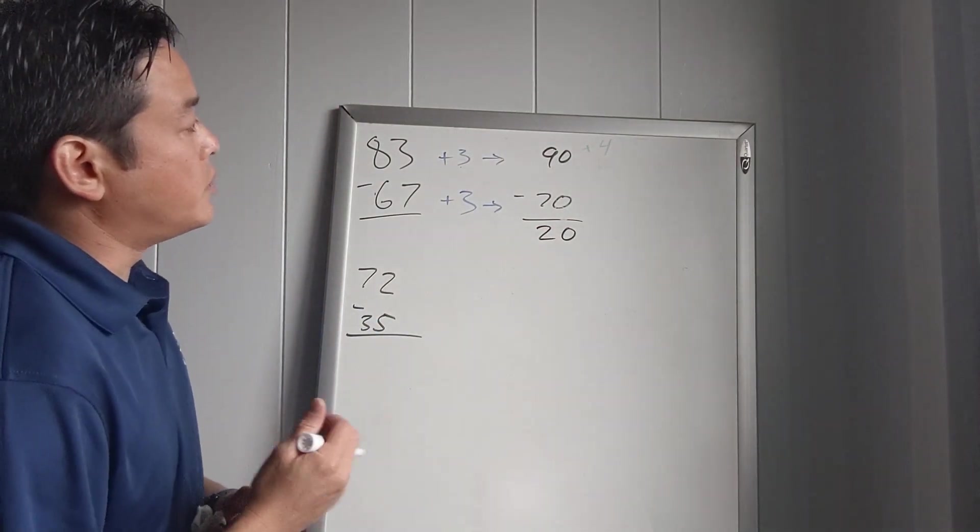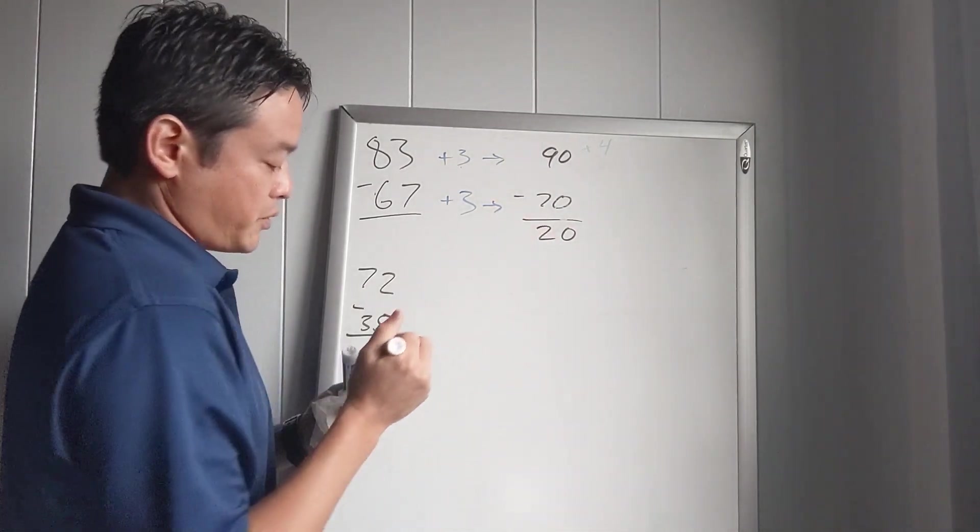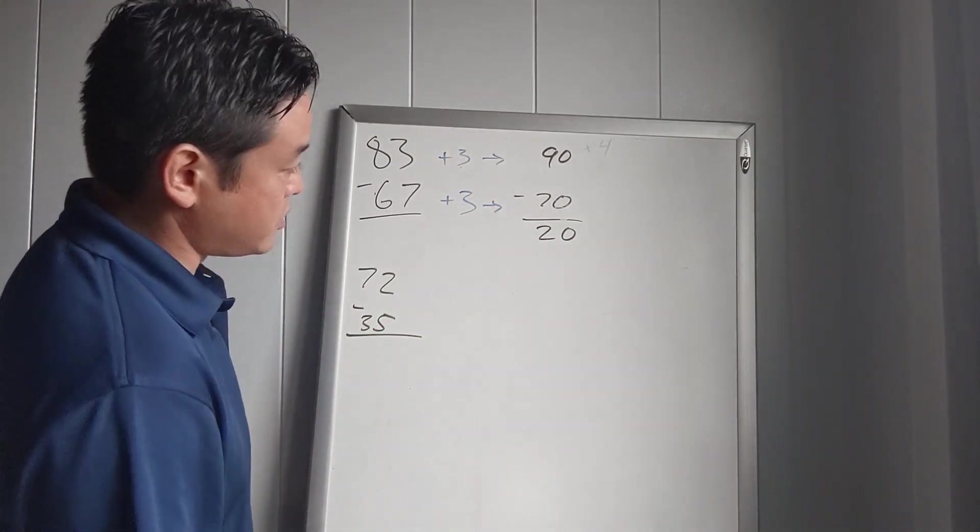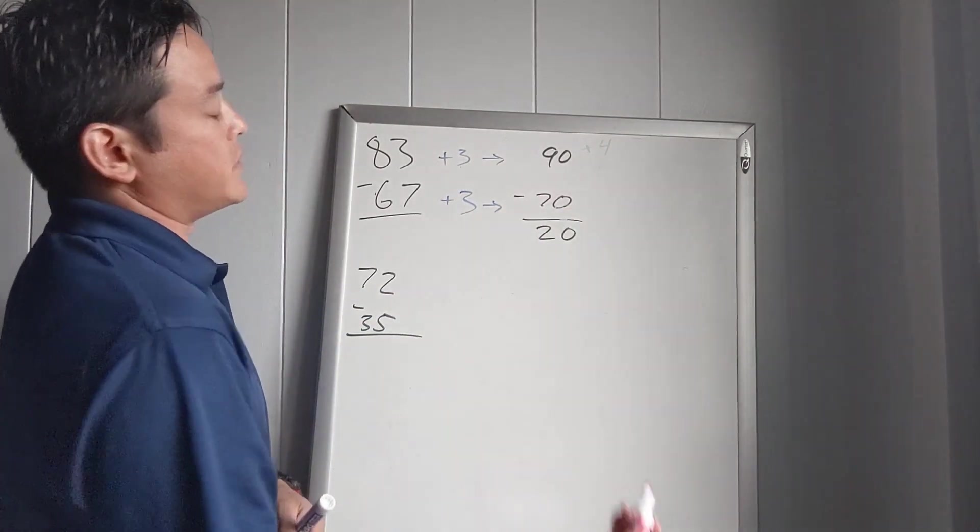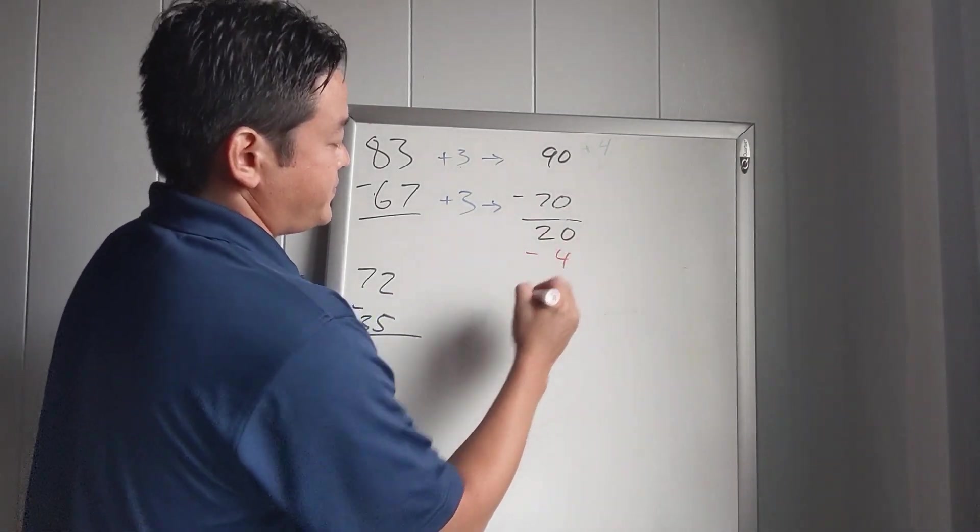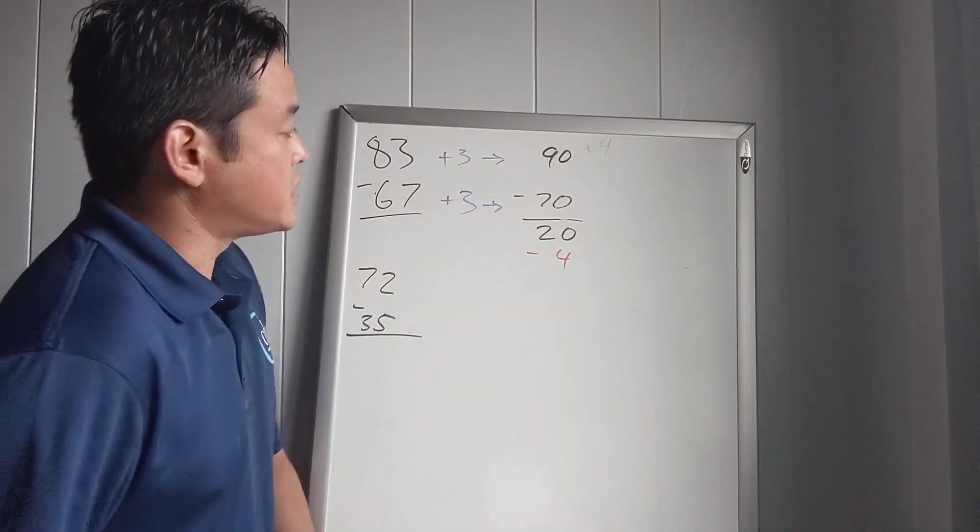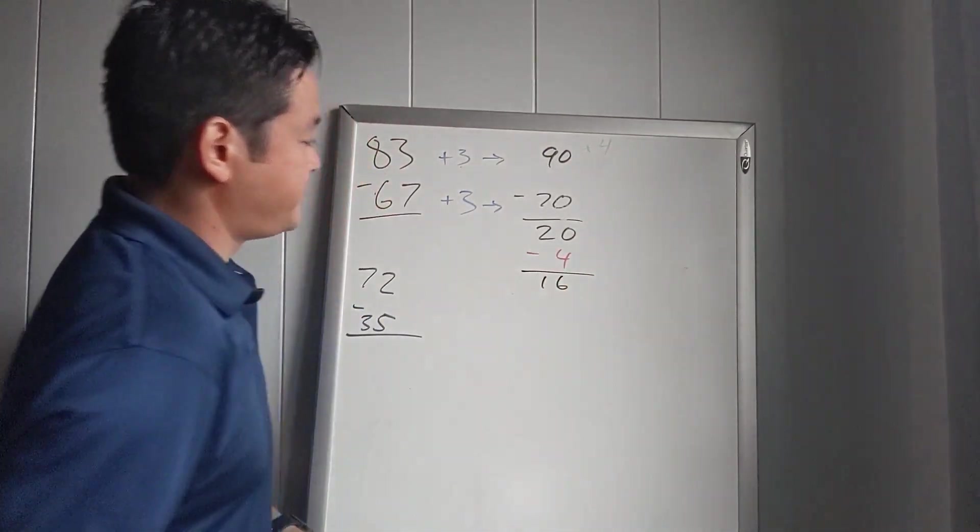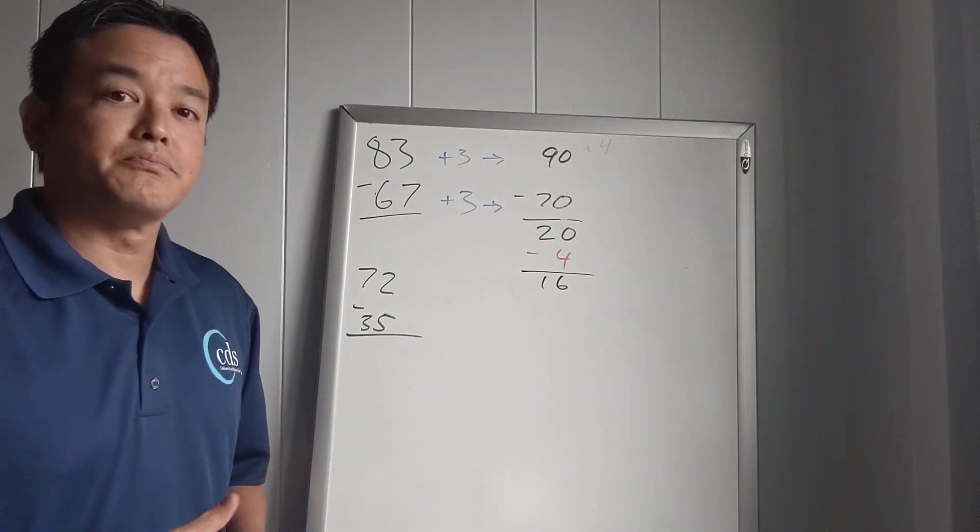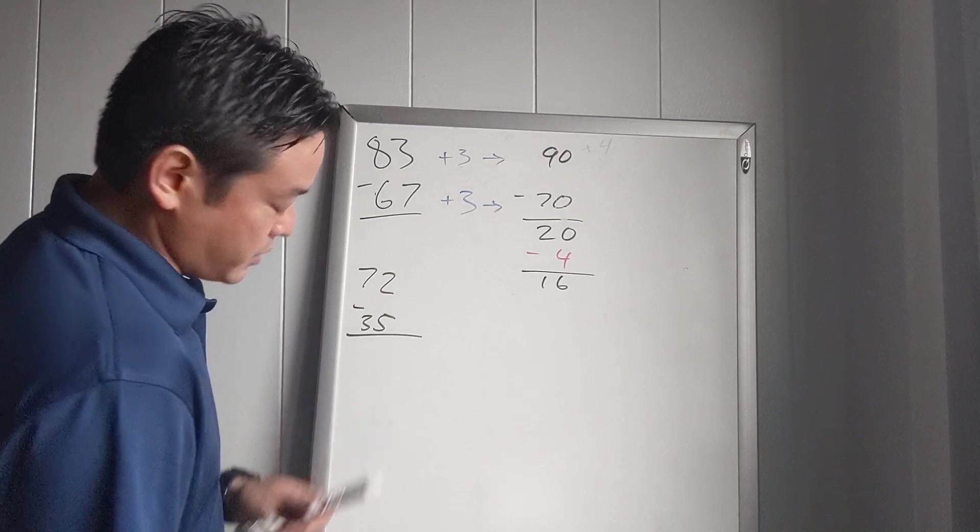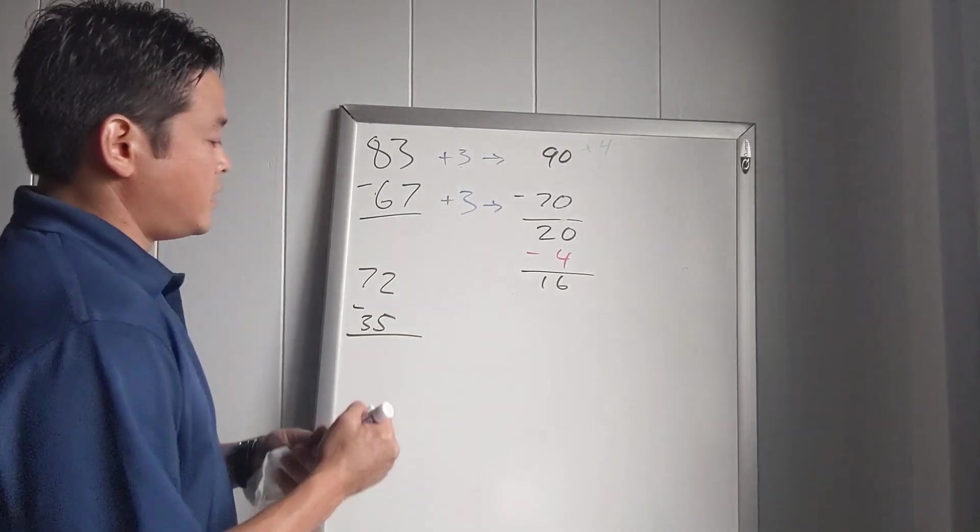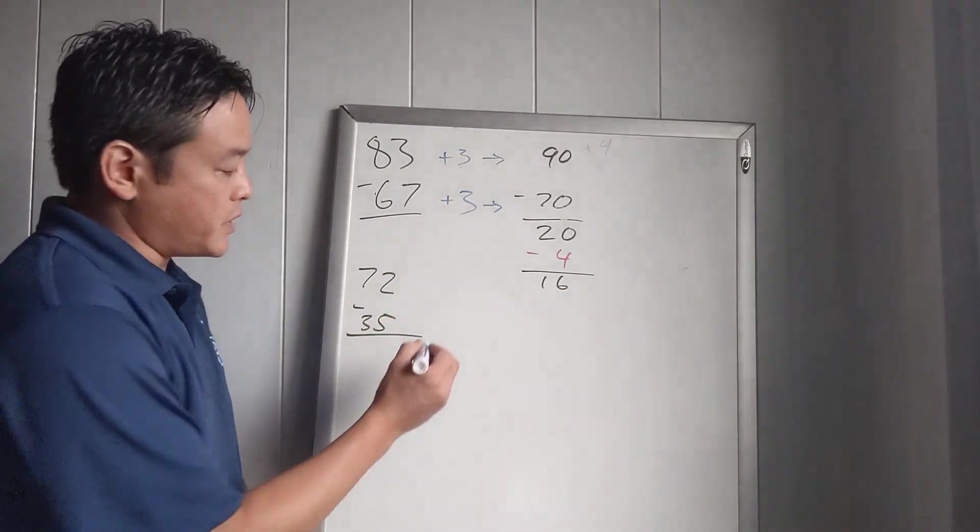And what we'll do from here is we have to remember to subtract 4 at the end. So because we added 4 to the top but we didn't add 4 down here, we have to now subtract the 4, which gives us 16. Okay, let's try this problem. Here we're going to try to get to 40, so we're going to add 5.